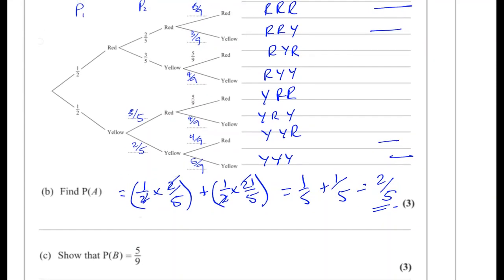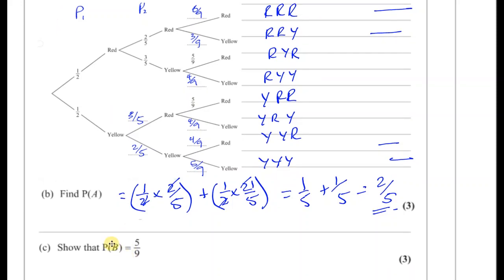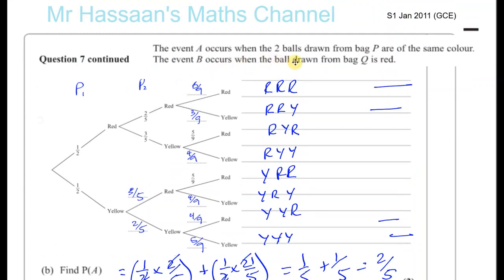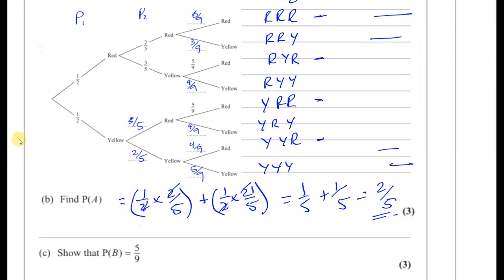Part C says: show that the probability of B equals 5 over 9. Event B is when the ball drawn from bag Q is red — that's the third pick. So we need to add these four outcomes: red-red-red, red-yellow-red, yellow-red-red, and yellow-yellow-red. The probability of B equals: a half times 2 fifths times 6 over 9, plus a half times 3 fifths times 5 over 9.